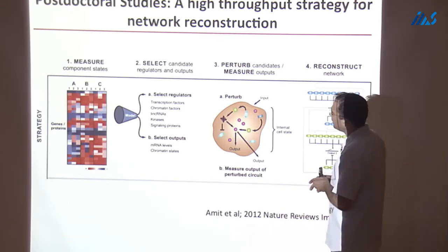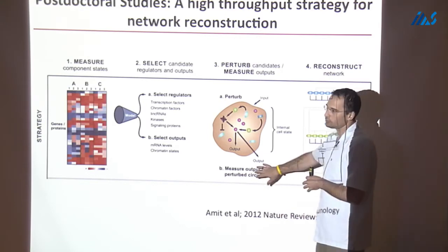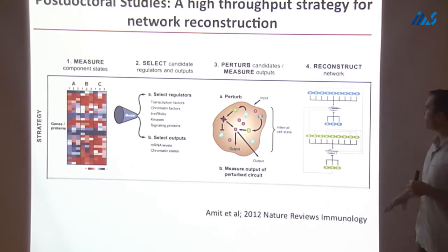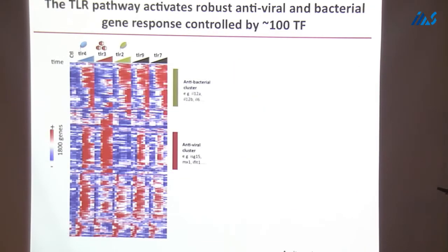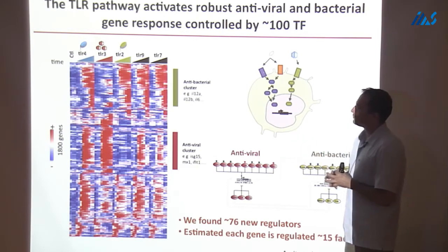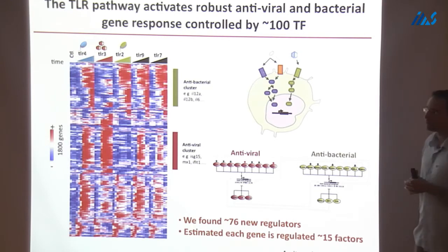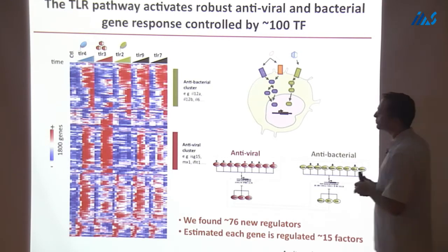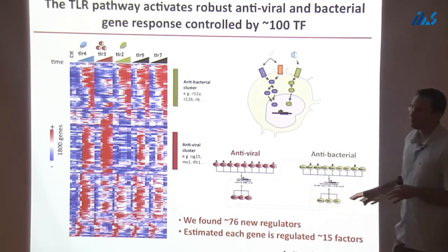Once we have the signature, we can use RNAi or other methods to perturb any one of these potential regulators and measure how the wild-type response changes. Based on that, we can build a network of where transcription factors sit and how they impact the response. When we did this for the dendritic cell system, there were over 100 transcription factors expressed or induced at any time point. Perturbing them, 76 significantly impacted the response — changing either the viral pathway or the inflammatory pathway — with a lot of crosstalk between networks. We estimated that each gene is regulated by at least 15 factors, and this was really an underestimation.